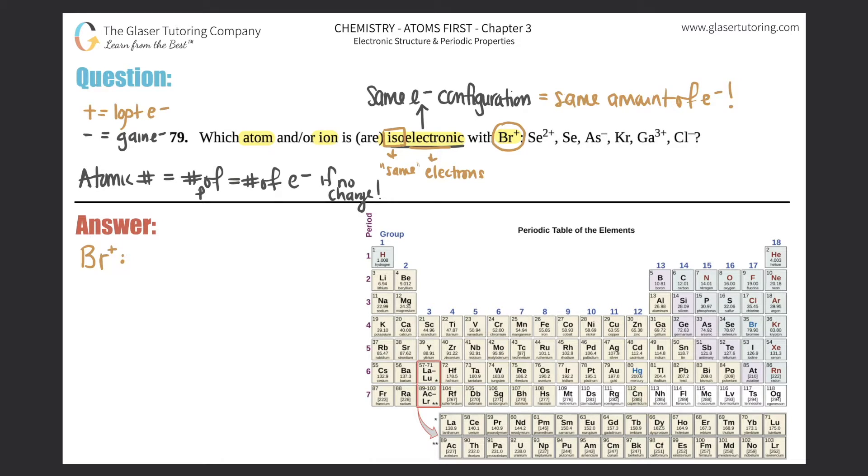Bromine is over here. The atomic number of bromine is 35, so 35 electrons. But now it's telling me that it's a plus, and there's no number, so we assume that it's a +1. Plus one means we lost one electron, so 35 minus 1 is 34.